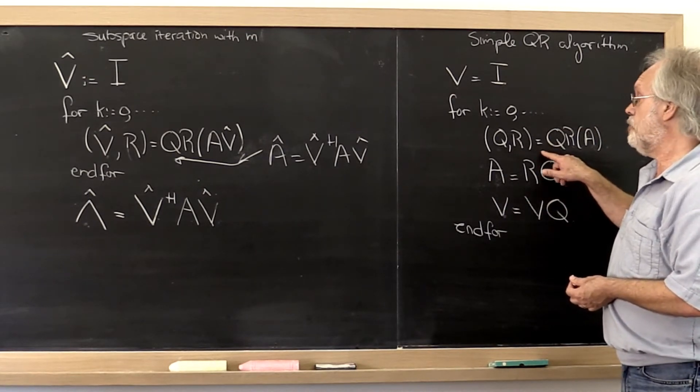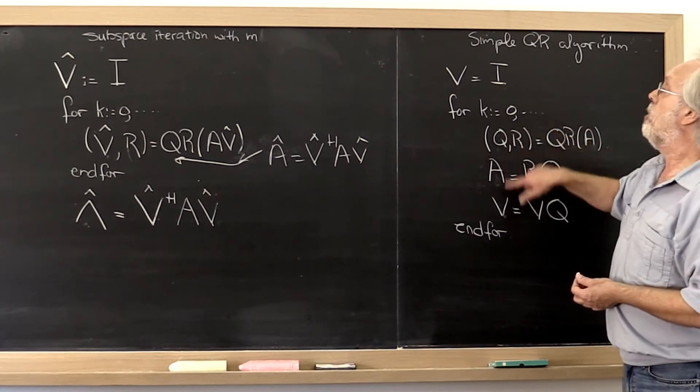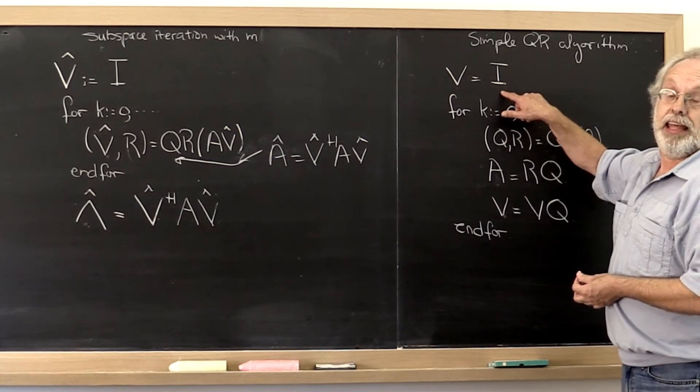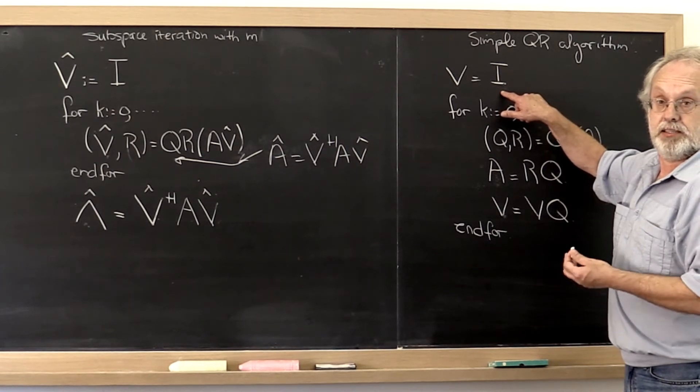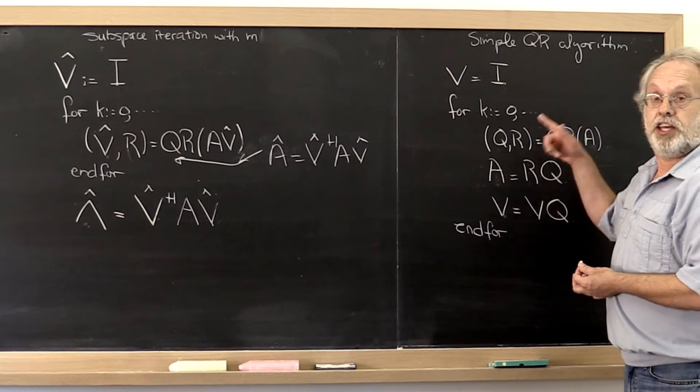Except that in this new basis our vector that we would have multiplied by A now becomes the identity matrix again in that basis. Then you do another step of subspace iteration and you keep doing that.